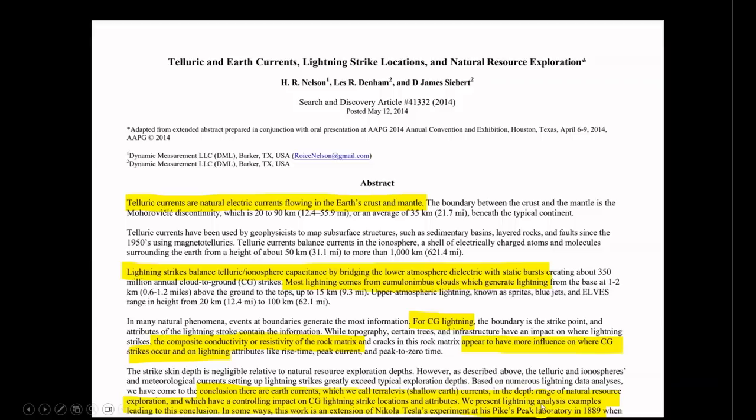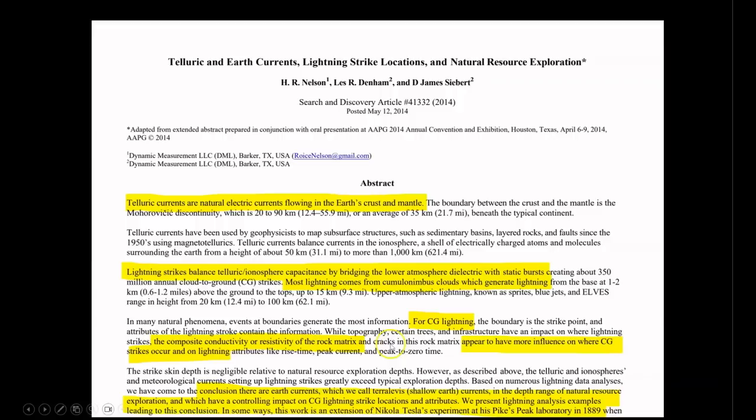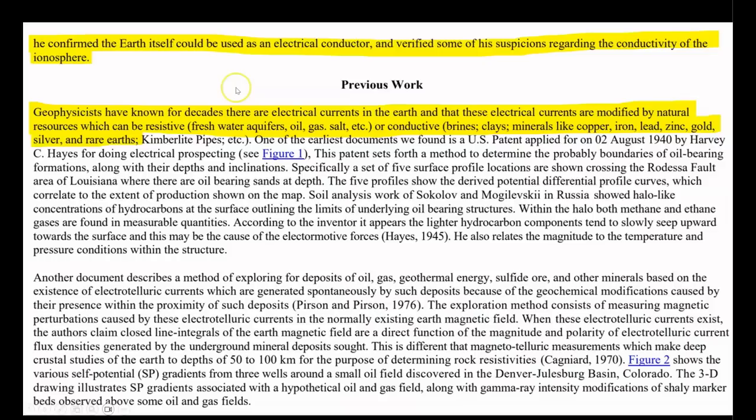They present in this document lightning analysis examples that lead to this conclusion. In some ways, this work is an extension of Nikola Tesla's experiment at his Pikes Peak Laboratory in 1889. When he confirmed that the Earth itself could be used as an electrical conductor and verified some of his suspicions regarding the conductivity of the ionosphere. Next, geophysicists have known for decades that there are electrical currents in the Earth and that these electrical currents are modified by natural resources, which can be resistive, i.e., fresh water aquifers, oil, gas, salt, etc., or conductive, i.e., brines, clays, minerals like copper, iron, lead, zinc, gold, silver, and rare earths.